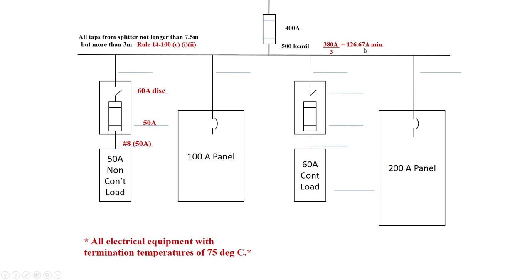Going to table 2 under the 75 degree column, we would have to select a number one. Number ones are good to 130 amp, which is definitely within the one-third of our 500 KC mil. Here's our 100 amp panel and 100 amp overcurrent on it.